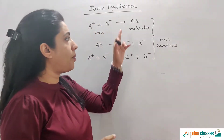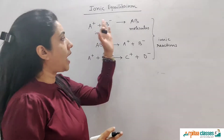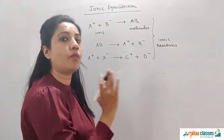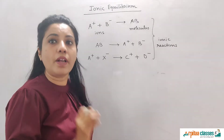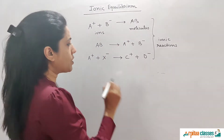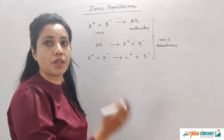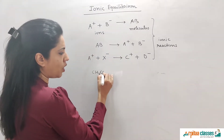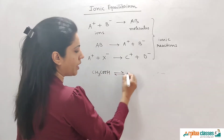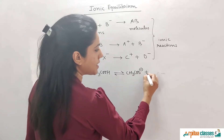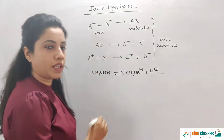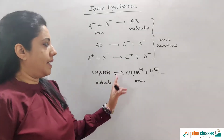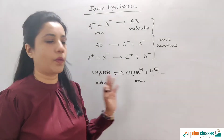Whenever we talk about the equilibrium of these types of ionic reactions, ionic equilibrium comes into the picture. If these reactions are unidirectional — meaning the reaction is happening in one direction — we cannot talk about equilibrium. Equilibrium only comes in case of a reversible reaction. For example, CH3COOH dissociates to give CH3COO⁻ and H⁺. For this type of reversible reaction where a molecule dissociates into ions, we can talk about ionic equilibrium.